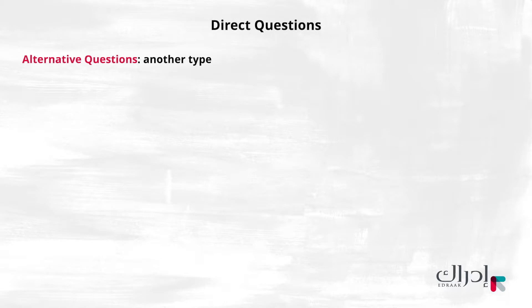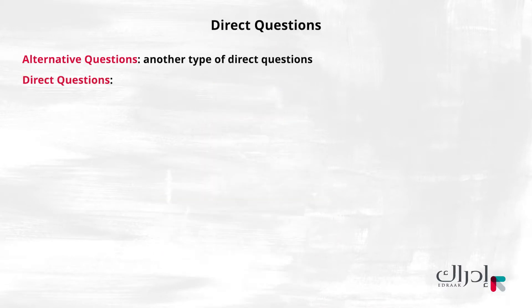Hi everyone! This lesson is about direct questions. Alternative questions are another type of direct questions. Alternative questions require an answer chosen from the options given in the question. These types of questions always contain the connecting word OR.